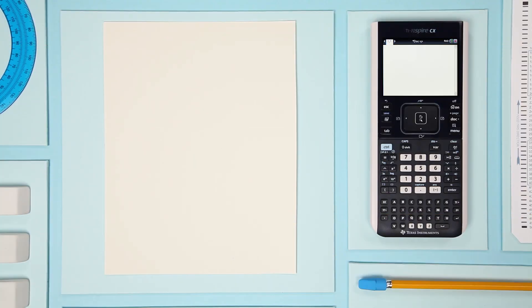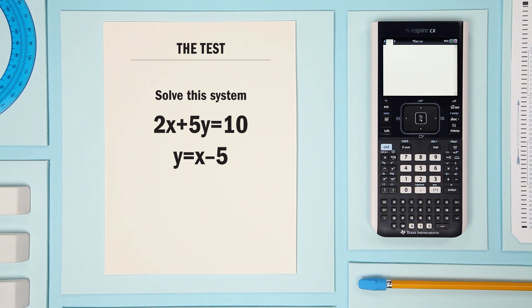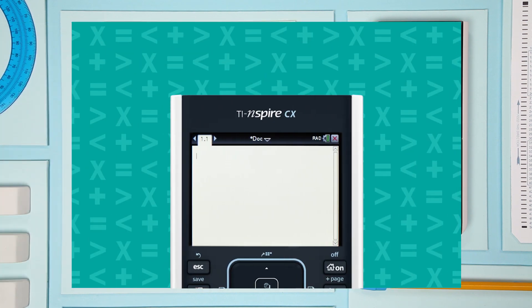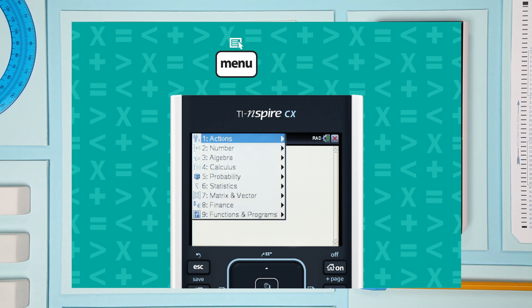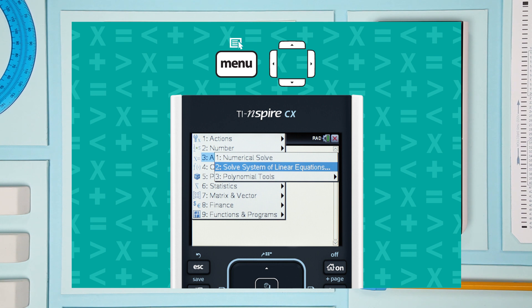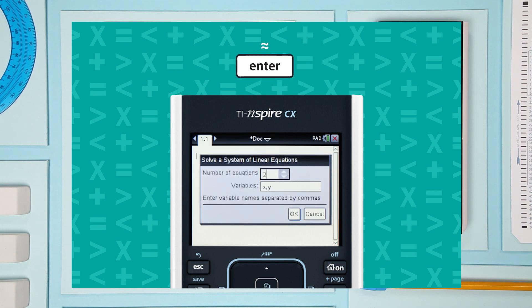Let's look at solving systems of linear equations involving two variables. Check out this first example. On a calculator page, press menu, select algebra, and the solve systems of linear equations feature, and enter. That opens this dialog box.